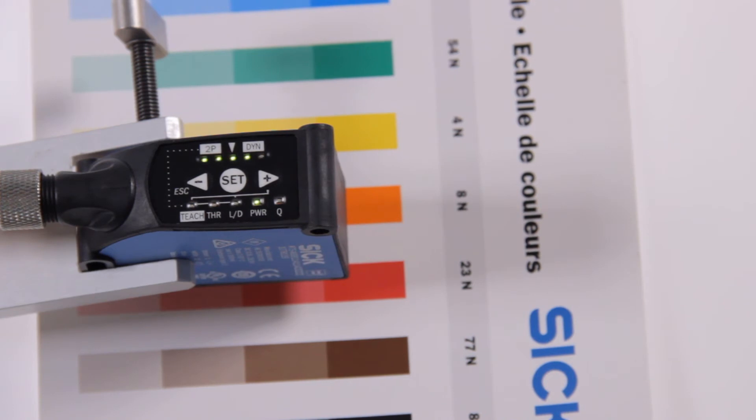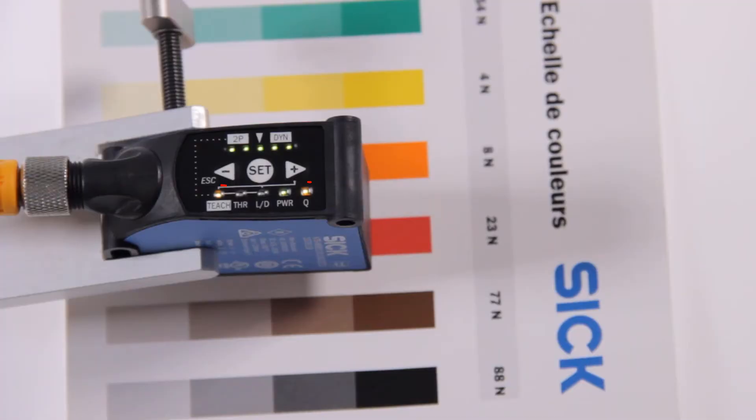The quality of teach is shown as feedback of the green LED bar graph. A blinking bar graph as well as blinking yellow LEDs indicate a faulty teach. In this case confirm with the SET and redo the teach.